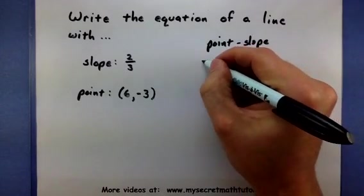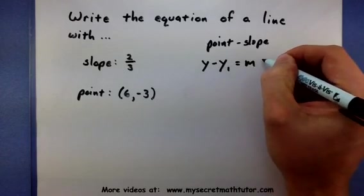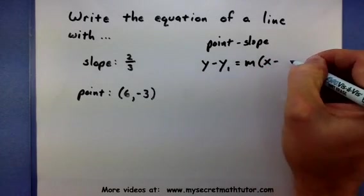So here's what that looks like: y minus y₁ equals m times (x minus x₁).